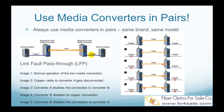This is where link fault passthrough comes in. The detailed operation of link fault passthrough is illustrated in the right figure. Image 1 shows normal operation of the two media converters. Image 2 shows copper cable to converter A gets disconnected. Image 3 shows converter A disables the connection to converter B. Image 4 shows converter B disables its copper connection. And image 5 shows converter B disables connection to converter A.